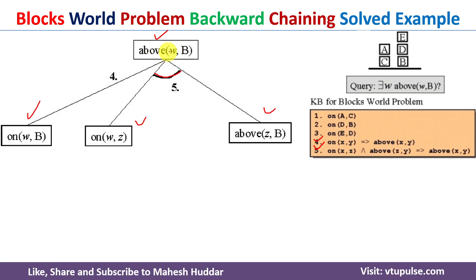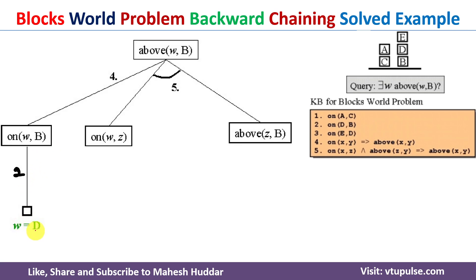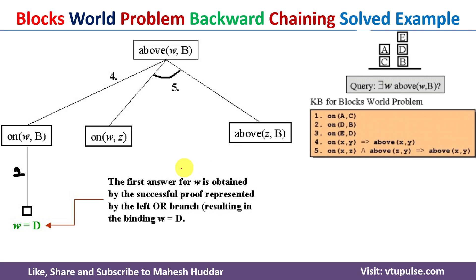We first consider the left branch on(w, b), where w is a variable and b is a block. Looking at the knowledge bases, the second one says on(d, b), so if we replace w with d we can use rule 2. This means d is present on b, and by rule 4, d is present above b. So d is the first block found above b.